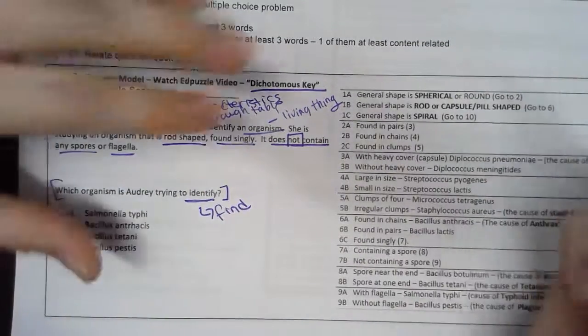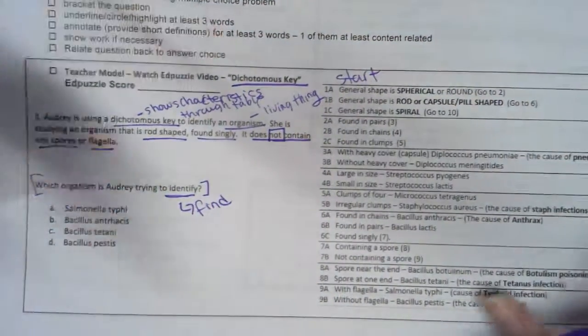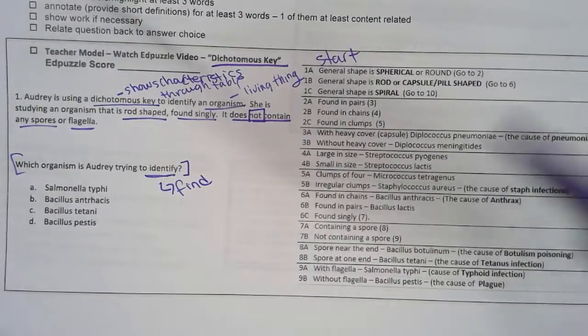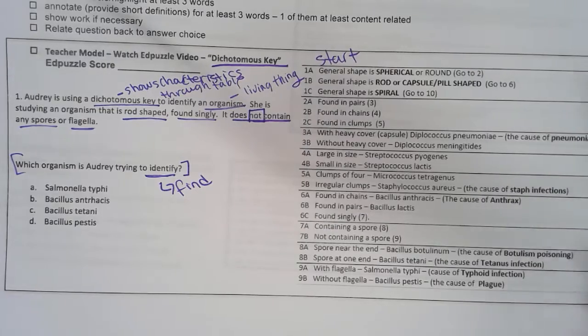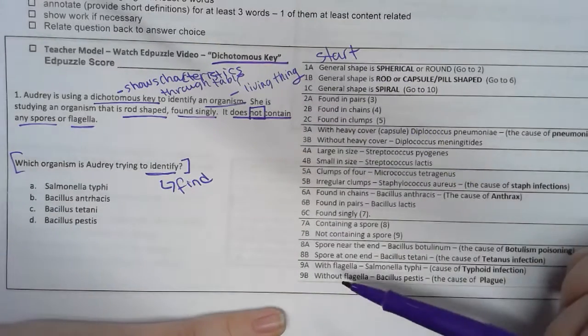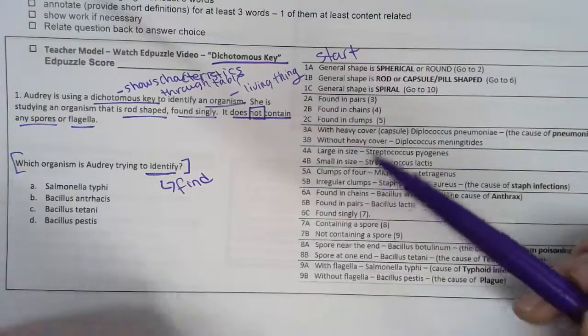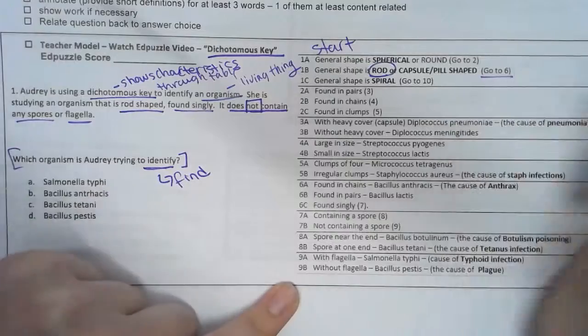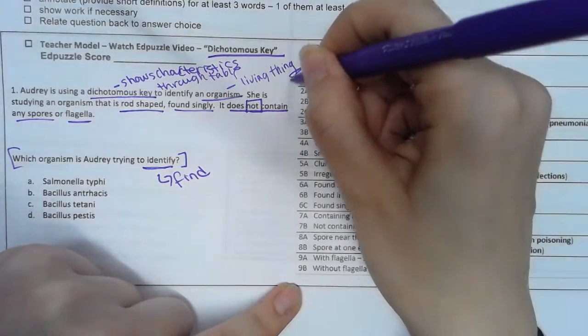I'm going to start from the very top. This dichotomous key looks kind of different from the one that you just filled out. Both formats are completely acceptable. This is the one that you're more going to see on your test. All right, I start at the top and work my way down, and it really tells me where to go. All right, I know that it's rod-shaped. Rod-shaped - that means that I go to step six.